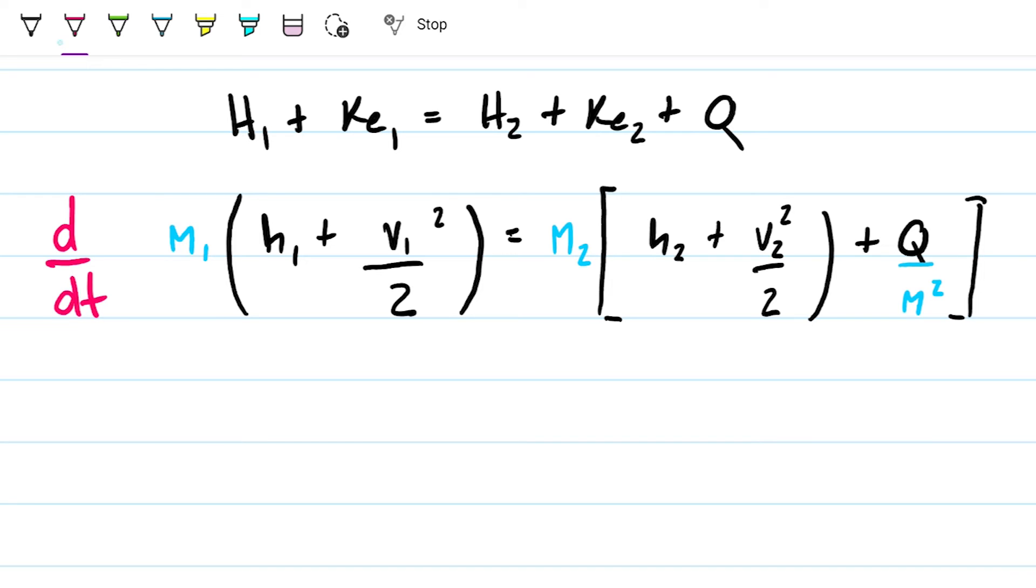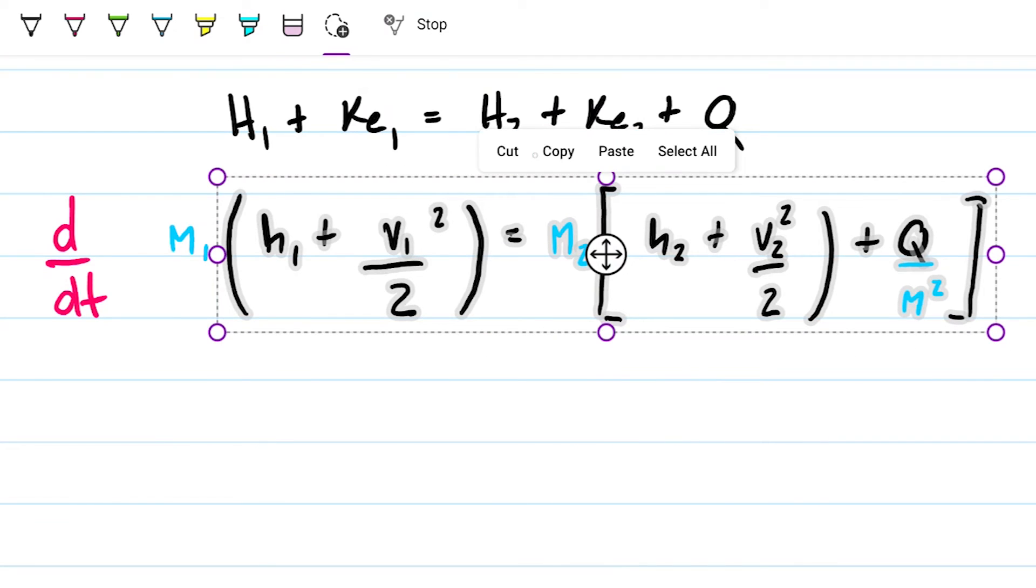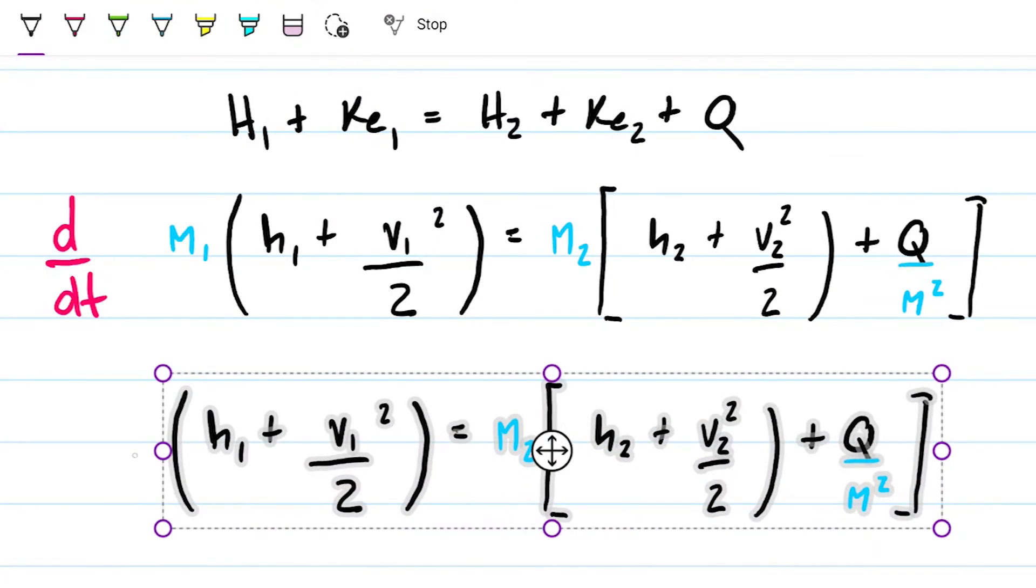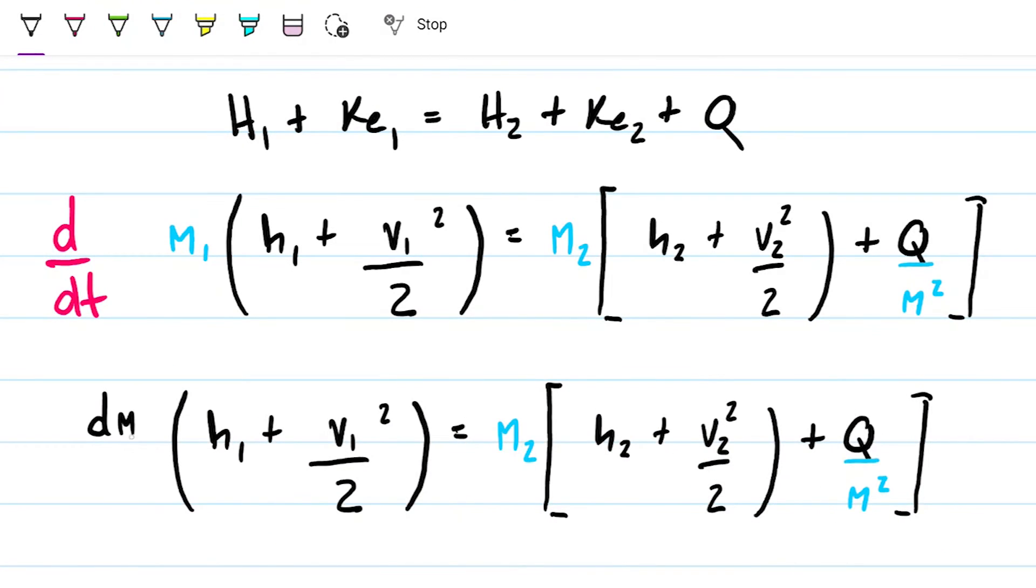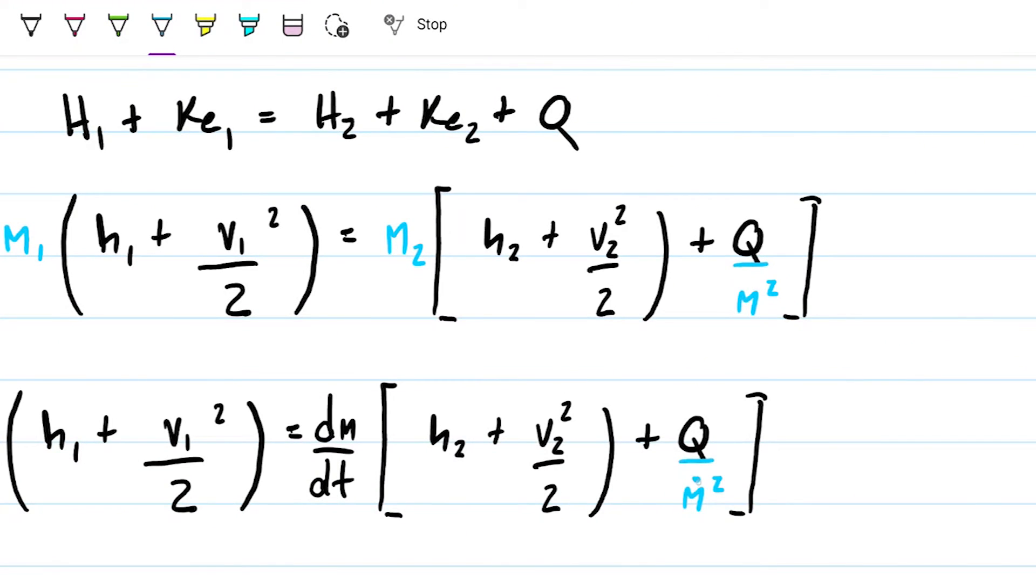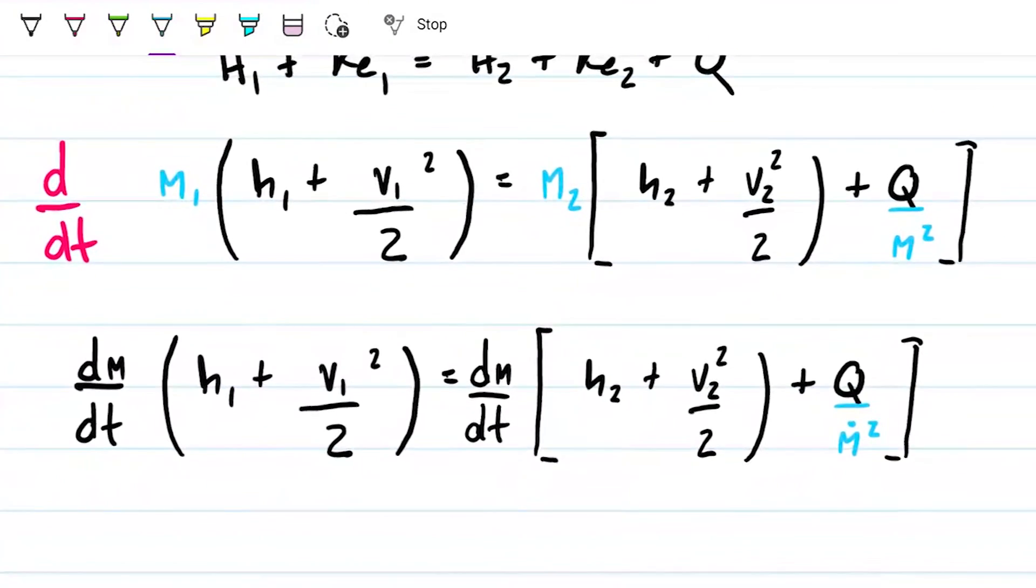So what ends up happening is that we have this. We're going to end up with the rate of mass with respect to time. Over here, same thing. The rate of mass with respect to time multiplies all these guys here. And this is also mass flow rate just there.